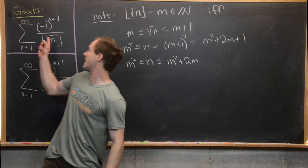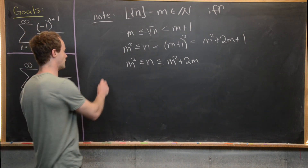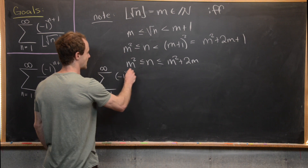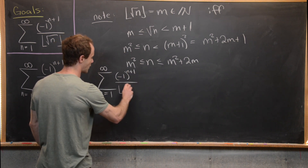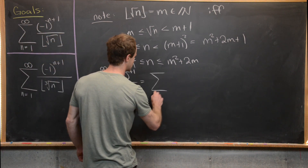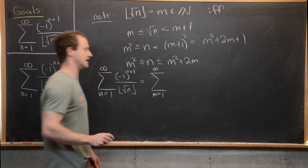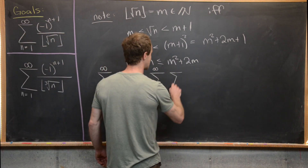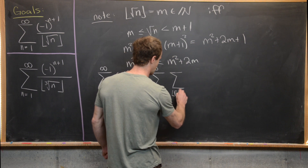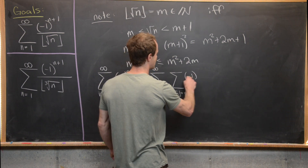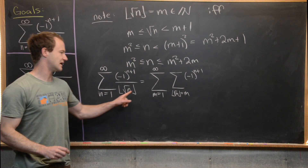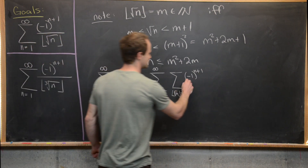Now we're going to use this inequality to rewrite our goal sum in a much more manageable form. We have the sum n equals 1 to infinity of minus 1 to the n plus 1 over the floor of the square root of n. I'm going to rewrite this as a sum over all natural numbers m — so m equals 1 to infinity — and then an inner sum over all n where the floor of the square root of n equals m, of minus 1 to the n plus 1 over m.